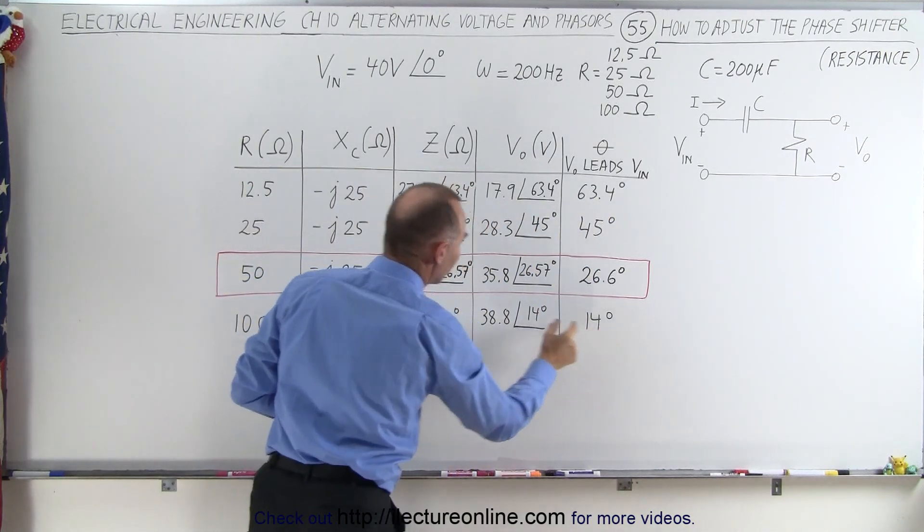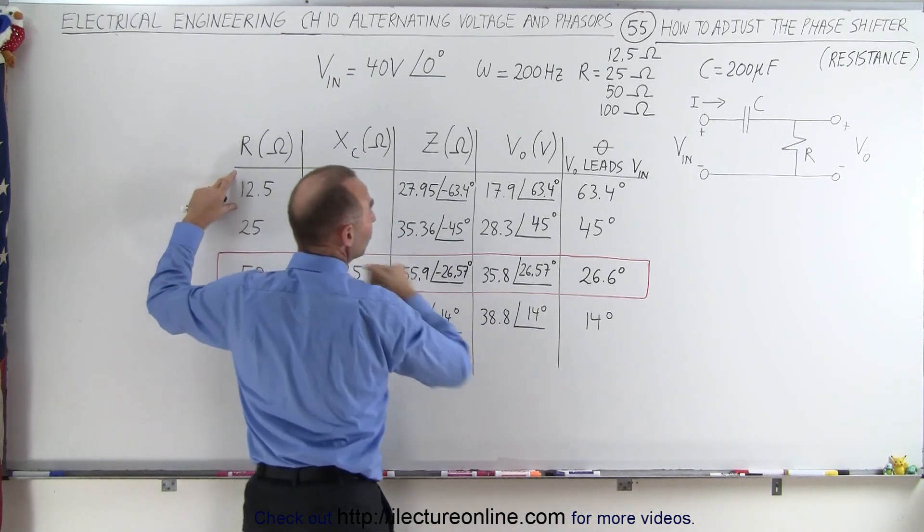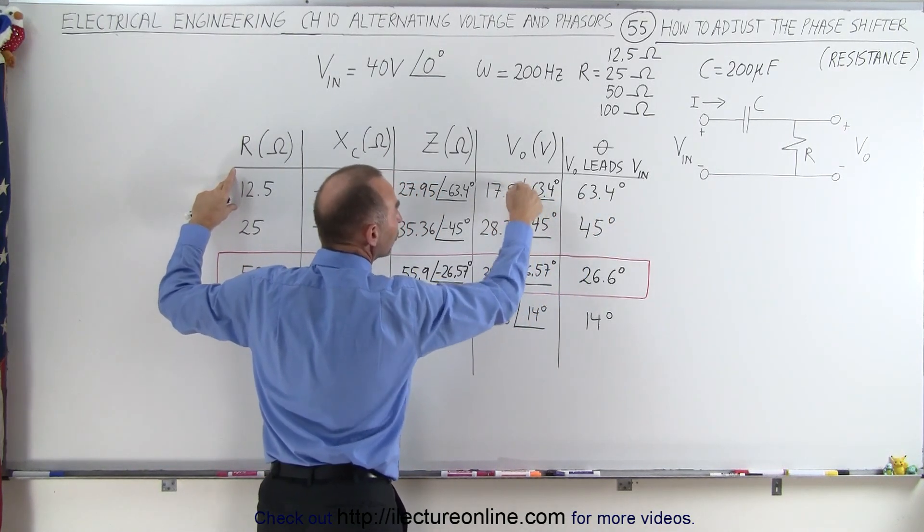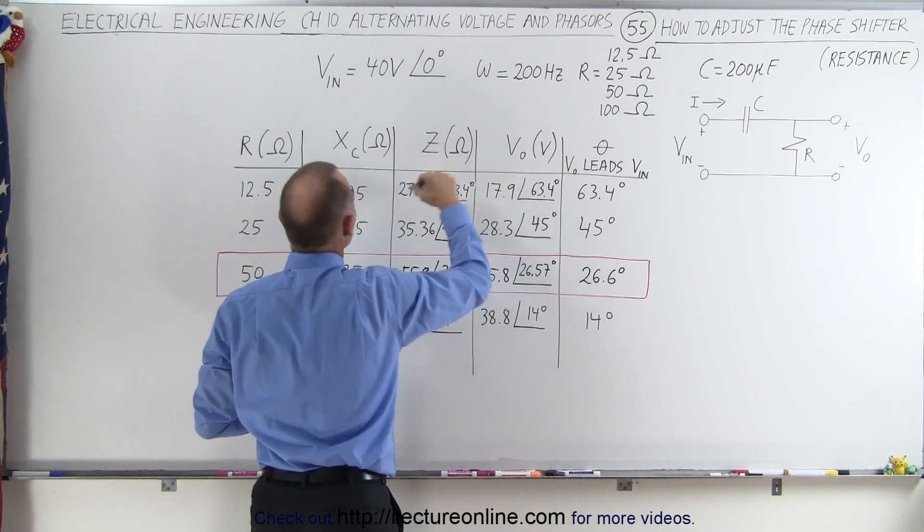We have a much smaller phase shift when we have larger resistors. But when we have a small resistor and a very large phase shift, we have a much smaller voltage output across the resistor, or the output voltage is much smaller.